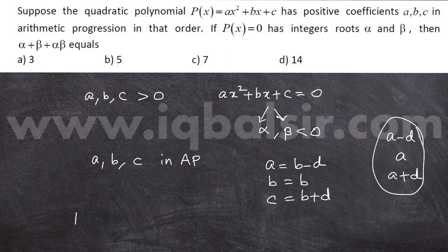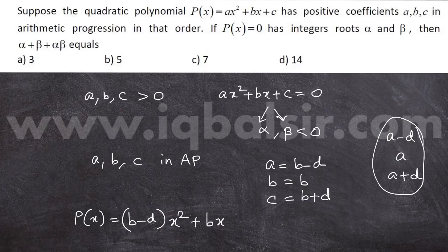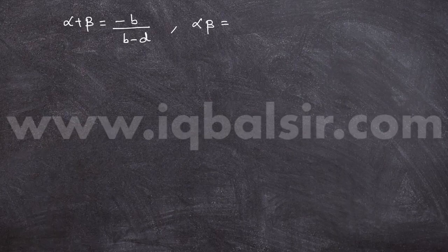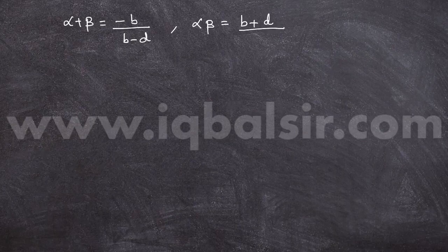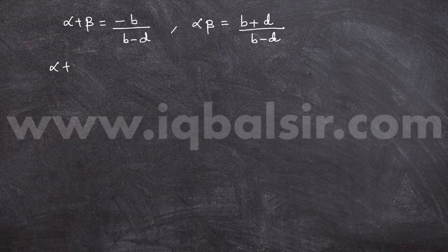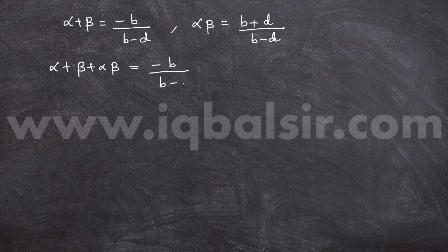Now the quadratic expression becomes p(x) = (b − d)x² + bx + (b + d) = 0. The sum of roots alpha + beta equals −b divided by (b − d), and the product of roots alpha·beta equals c/a, which is (b + d) divided by (b − d).